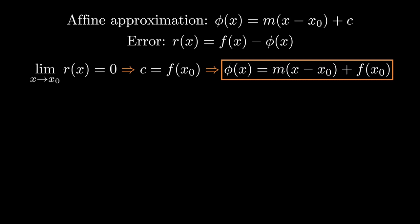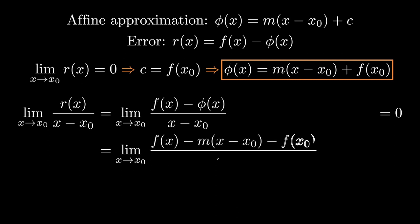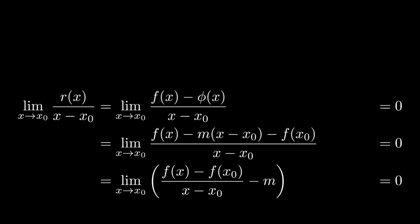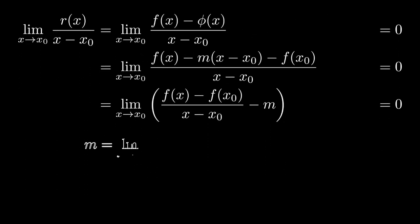The second thing we need is for the ratio between r and x minus x0 to also vanish as we approach x0. We'll go on and expand r of x here. Now let's insert the form of our affine approximation and we see that we can pull m out as its own term inside the limit. The limit of m is of course just m and we can add m to both sides of the equation.